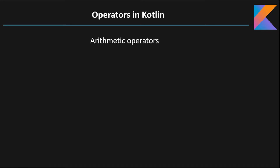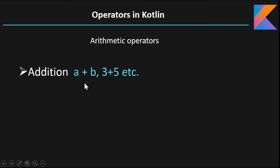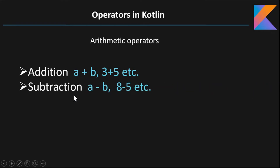Arithmetic operator. Generally, we do arithmetic operations in our day to day life, such as addition. For this there is the plus operator. Here A is the operand and B is the operand and plus sign is the operator. It is a binary operator because there are two operands and the operator performs the operation on two operands. So here A plus B, example three plus five. The second operator is the subtraction operator, indicated by the minus sign. So A minus B, that is eight minus five.